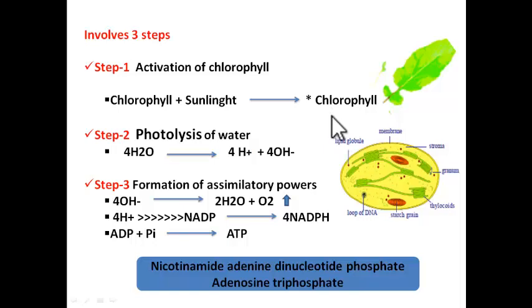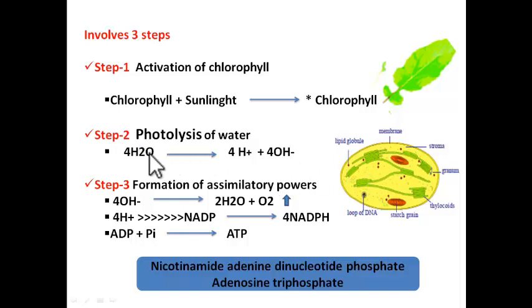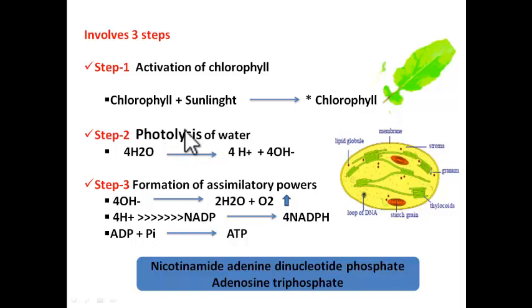When chlorophyll returns to ground state it liberates energy. That energy is taken up by water molecules present in the chloroplast. The water molecules absorb that energy and undergo a splitting process — water splits into H⁺ and OH⁻ ions. This process is called photolysis of water. Lysis means splitting, photo means light — since sunlight provides energy for the splitting of water, this step is called photolysis of water.